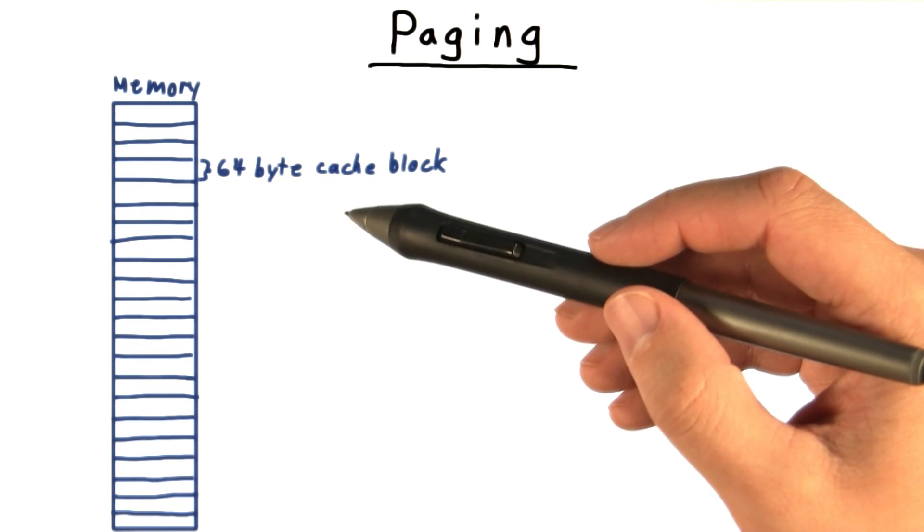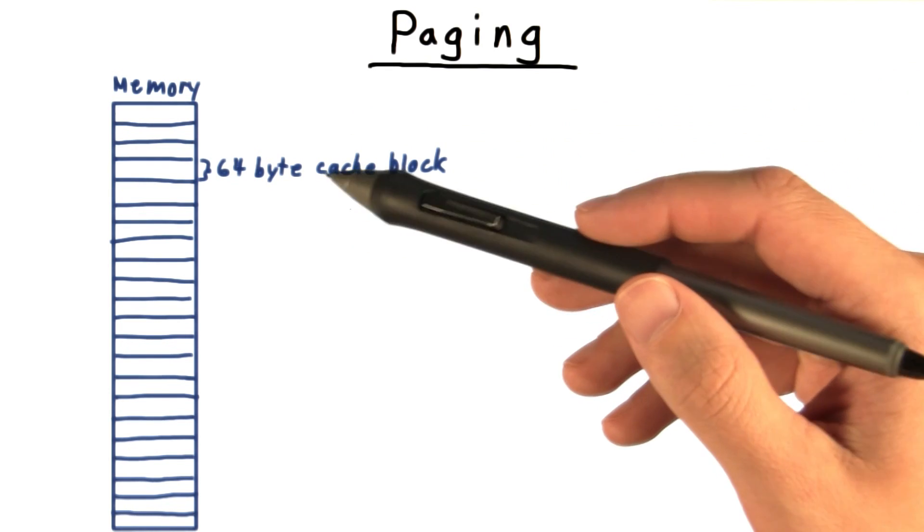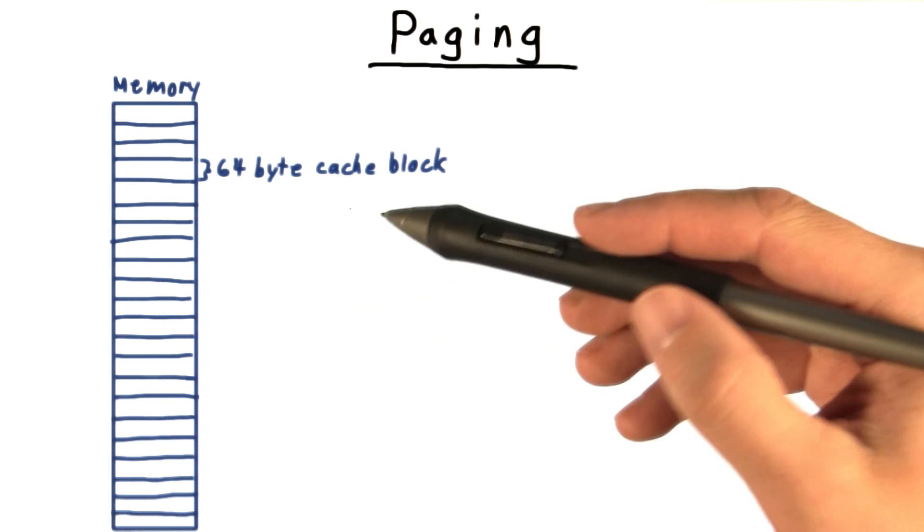Recall how for caches we divided memory into blocks or cache lines. And this is the granularity at which caching operates.